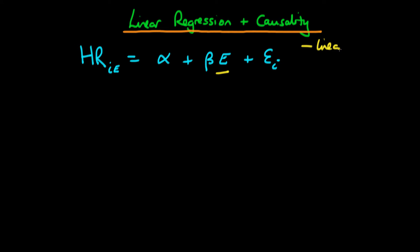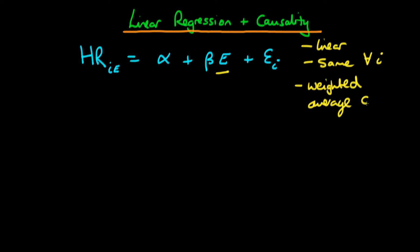We've assumed this relationship is linear, and we've also assumed that this functional relationship is the same for all individuals — that is, it's the same for all I. We don't have to make these two assumptions; we can assume the potential resting heart rate is both non-linear and differs between individuals. That makes the analysis more complicated, but in both cases regression ends up representing some weighted average of the causal effect of interest.